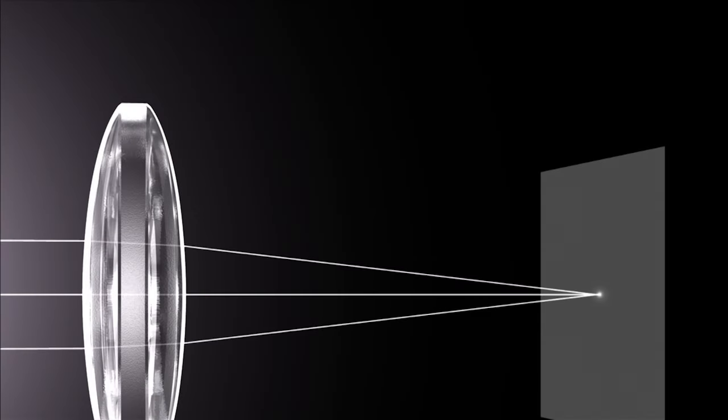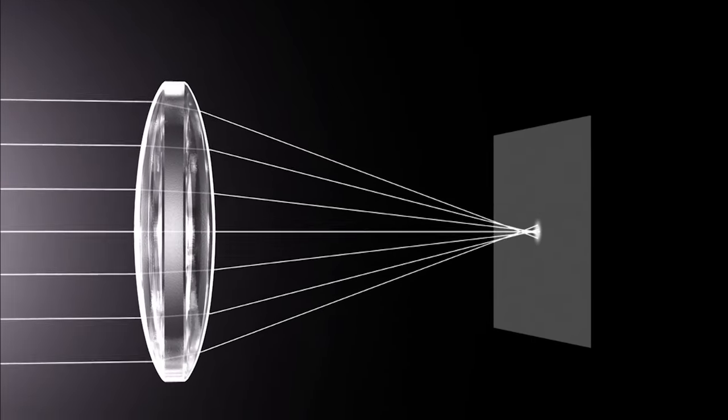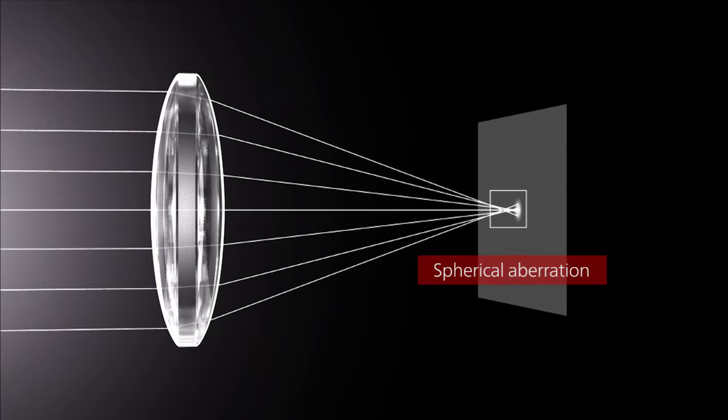The focal point where light rays passing through the center of the lens converge differs slightly from the focal point where light rays passing through the edge of the lens converge. This is called spherical aberration.